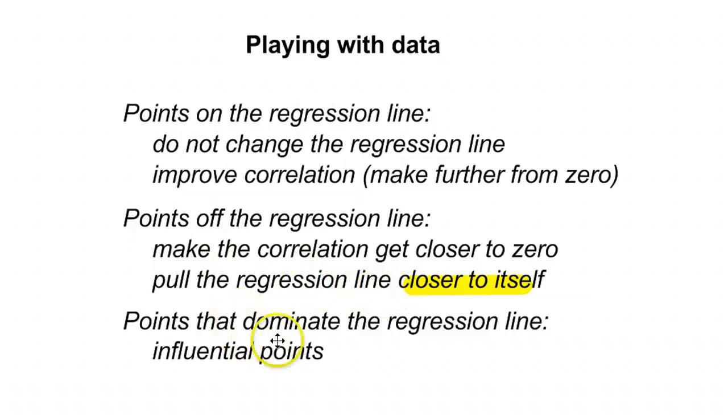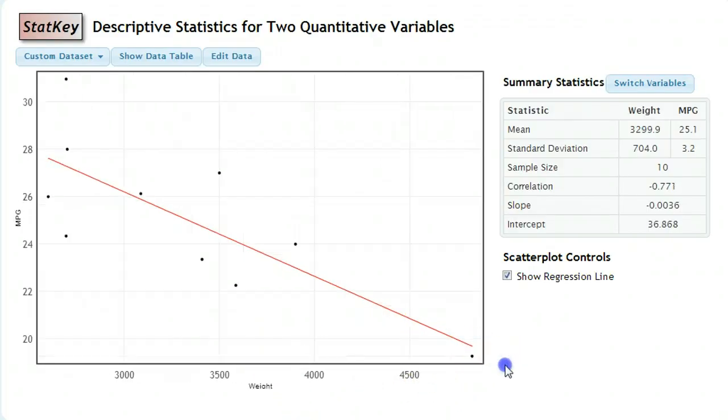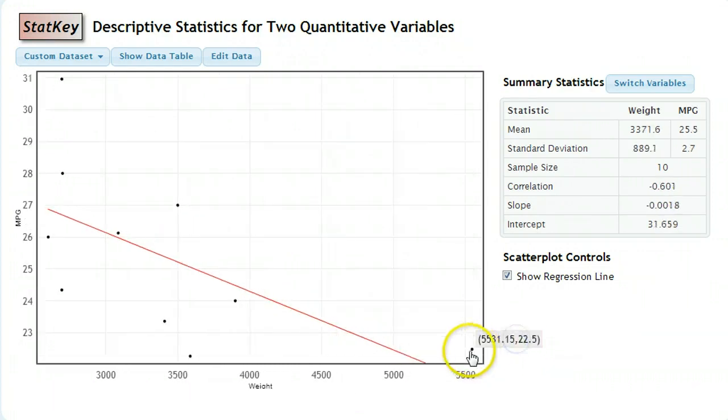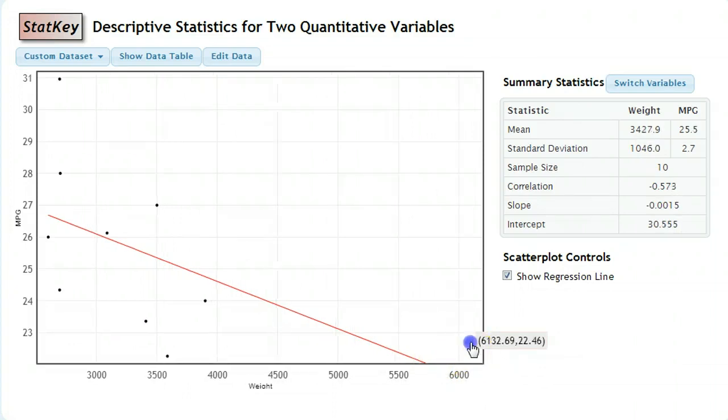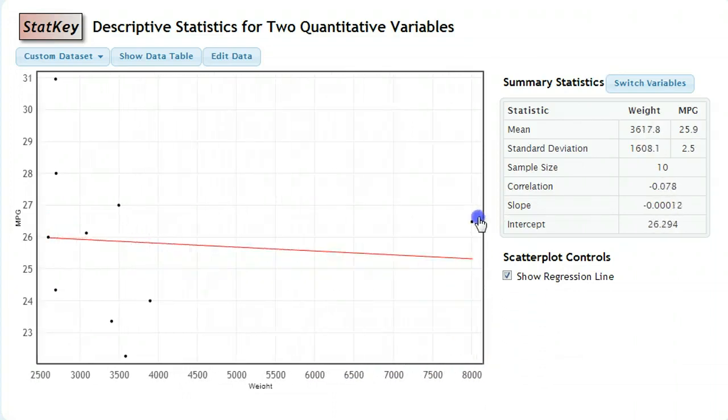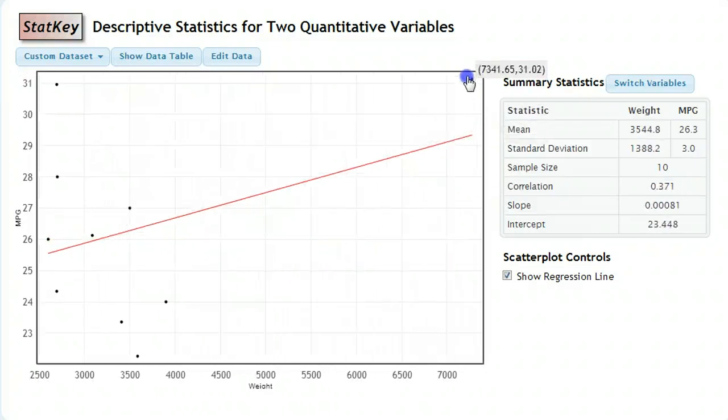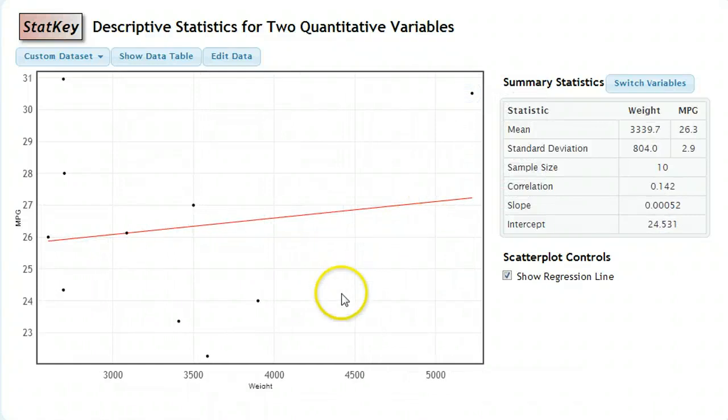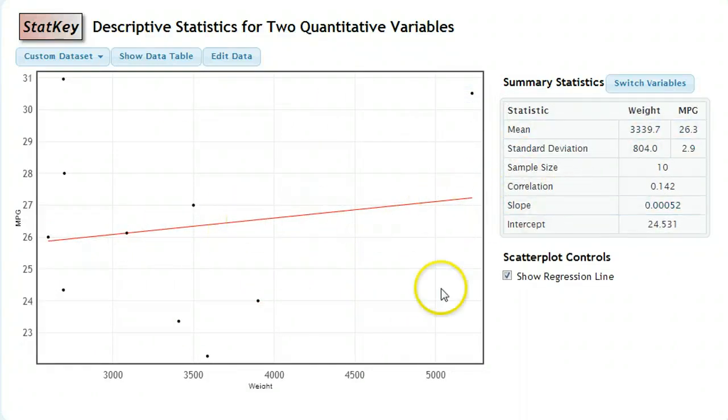And then the last thing we didn't look at is points that dominate the regression line are called influential points. So if you put a point way farther out than the rest of the data, way out on this end, on the extreme side, in the 6,000s, pretty much wherever I move this, the trend line is going to follow. Whenever you get that far out, the trend line does whatever that far out point says. So that's why you have to be careful if you have one point that's really far away from the others, because it can completely dominate your slope.